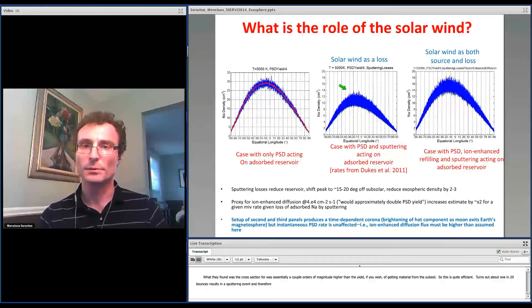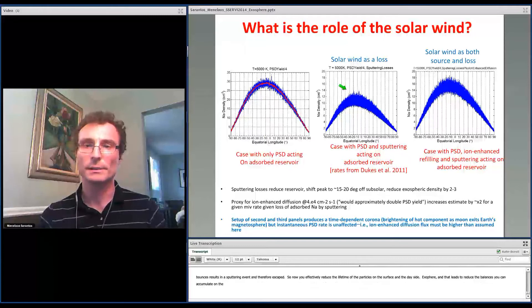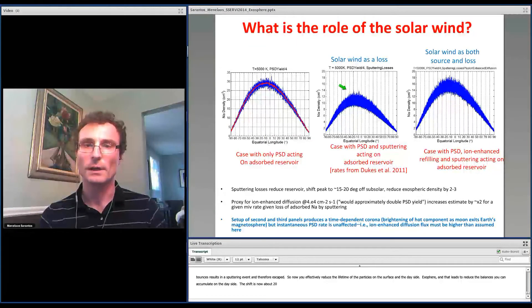So this is quite efficient. It turns out about 1 in 20 bounces results in a sputtering event and therefore escape. So now you effectively reduce the lifetime of the particles on the surface and the day side and the exosphere. And that leads to reduced abundances that you can accumulate on the day side. The shift is now about 20 degrees off, and that is because you further deplete the reservoir by eliminating particles more efficiently.